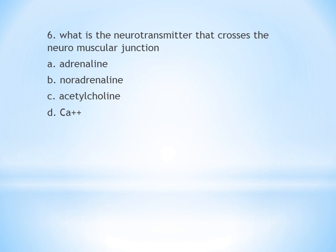Sixth question: What is the neurotransmitter that crosses the neuromuscular junction? A. Adrenaline, B. Noradrenaline, C. Acetylcholine, D. Calcium. Answer is acetylcholine — it is the neurotransmitter that crosses the neuromuscular junction.